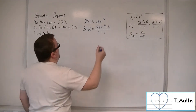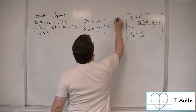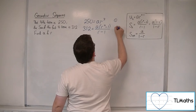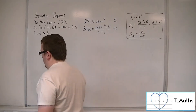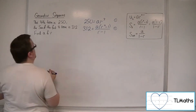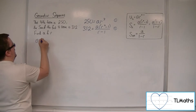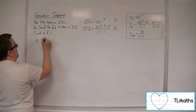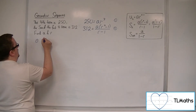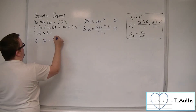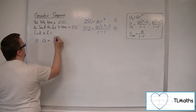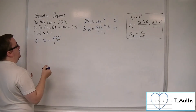Calling this equation 1 and this equation 2, I want to first rearrange equation 1 to get A in terms of R. So A will be 250 divided by R cubed.